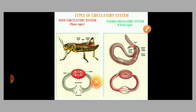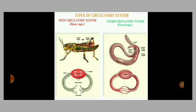The closed circulatory system was discovered by William Harvey in 1628, who is recorded as the father of modern physiology.